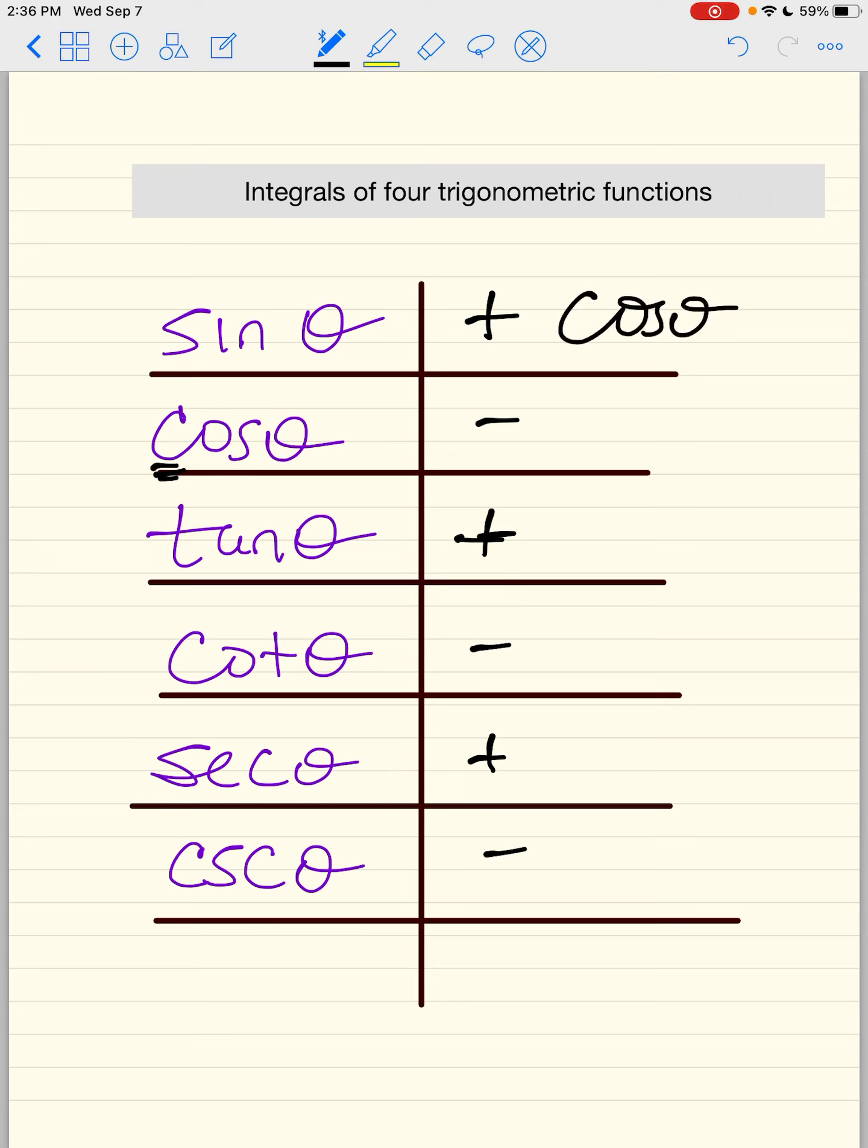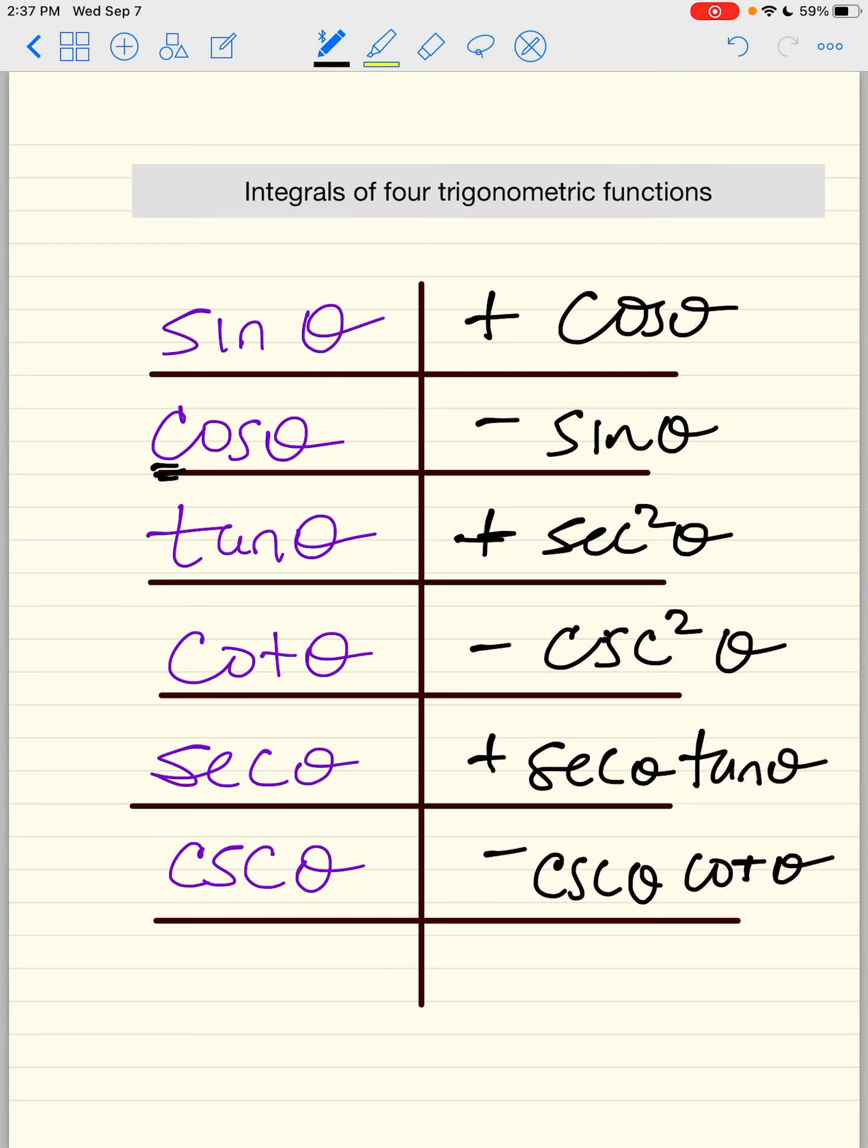So sine is cosine, cosine is negative sine, tangent is powerful so it gets secant squared, cotangent is also powerful so it gets negative cosecant squared, secant secant tangent, and cosecant cosecant cotangent. So these are our main six.